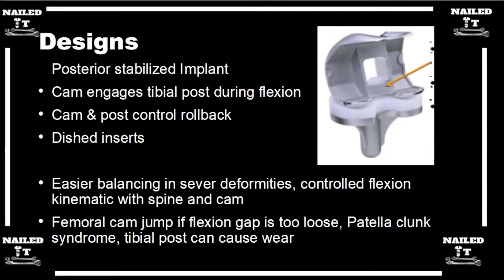The next level of stability after cruciate stabilizing would be a posterior stabilized implant. The posterior stabilized implant was kind of the first-generation knee design to recreate the PCL, and it's been around forever. It's a great design — it works very well with a very high success rate. There is a box cut and a post on the polyethylene. That post tries to recreate the PCL and prevents the femur from sliding forward. The cam engages the tibial post as you go into flexion, and the goal is to recreate rollback.